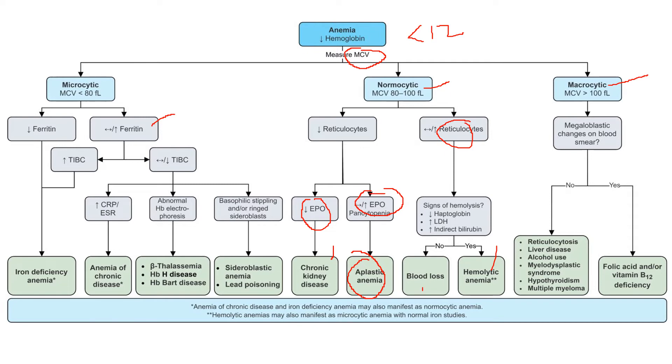Let's do a quick recap on normocytic anemia. What am I looking for? With microcytic I was looking for iron, I was looking for ferritin, for TIBC. With normocytic I'm looking for reticulocytes. I'm looking for: is my body producing normal red blood cells but something is happening to them downstream?